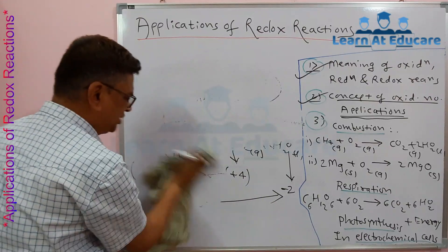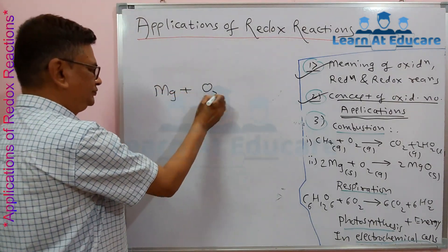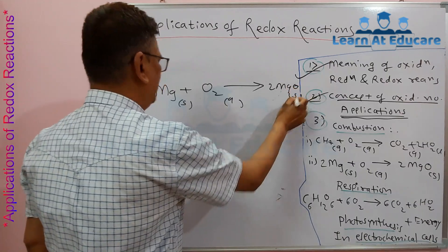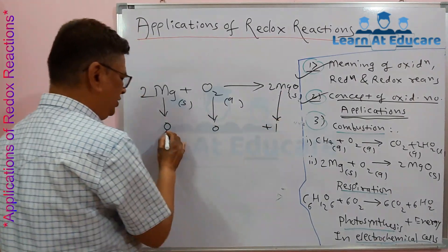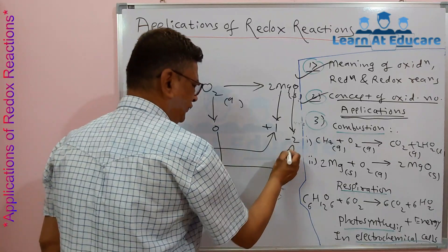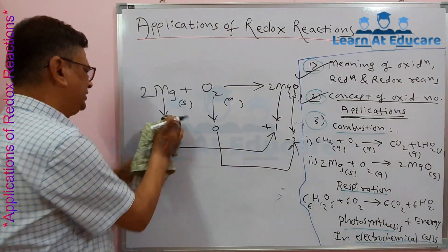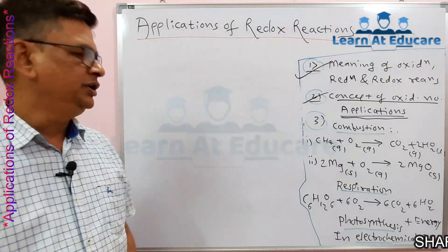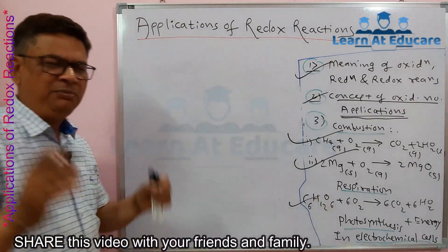Second example: combustion of magnesium. When magnesium wire is burned in air: 2Mg(s) + O2(g) → 2MgO(s). Here magnesium goes from oxidation number 0 to +2 — an increase, meaning oxidation. Oxygen goes from 0 to −2 — a decrease, meaning reduction. Therefore this is also a redox reaction.